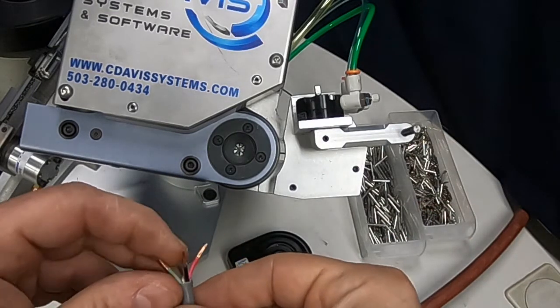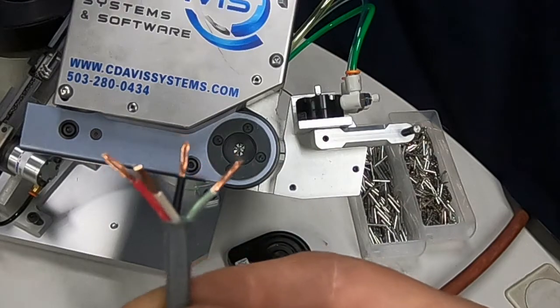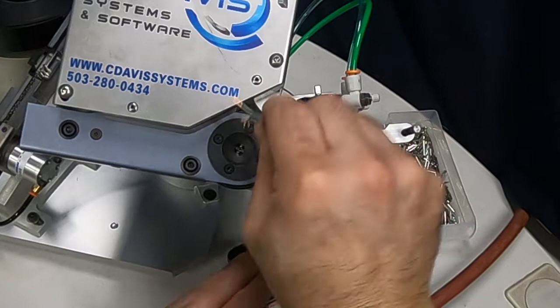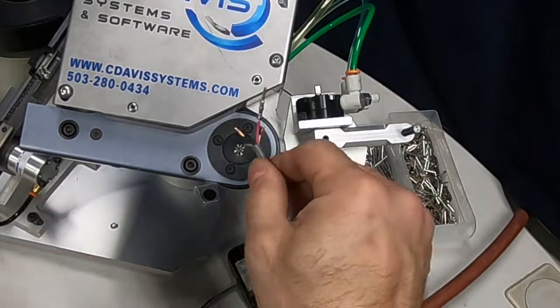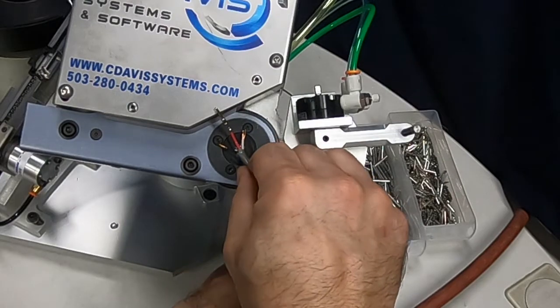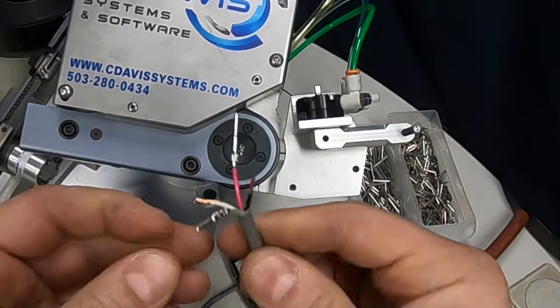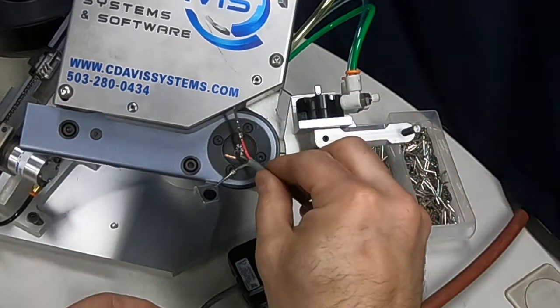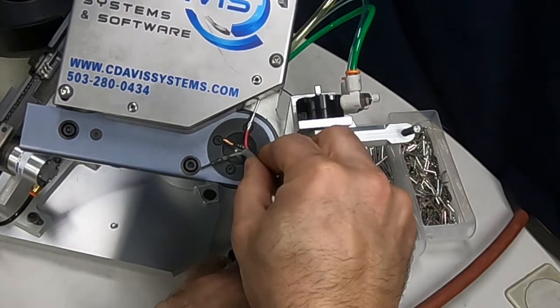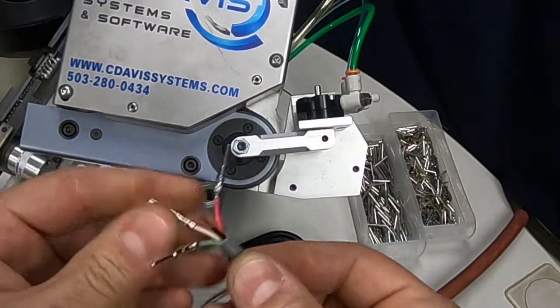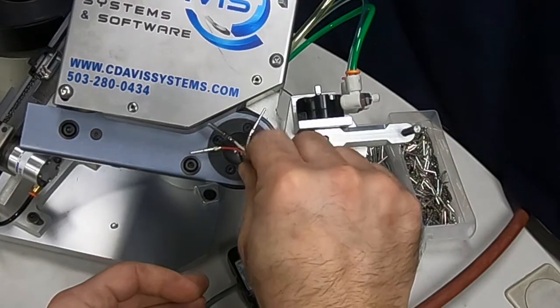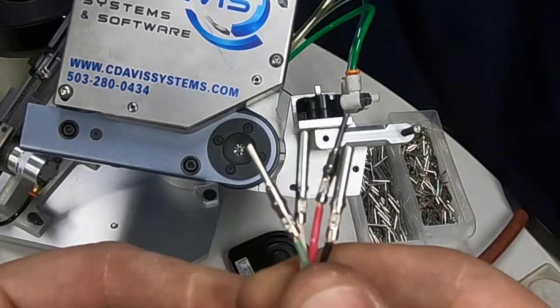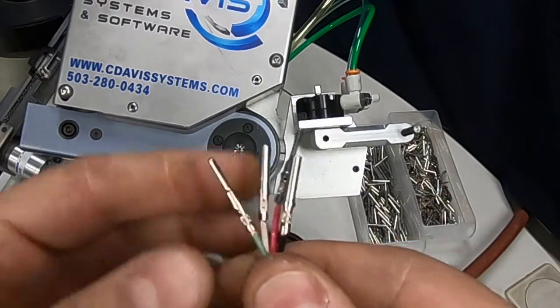Now, the real value of this head comes about when we're using short leads like this, because these are about a half an inch long. But I can get each one of them right up in here. I'm not a wire processing technician, I'm sure you guys are faster than me. But what you can see now is that a mix of pins and sockets have been crimped onto these very short leads.